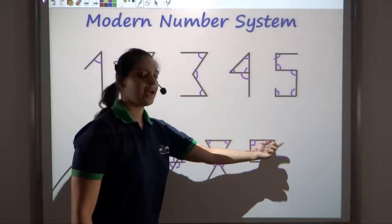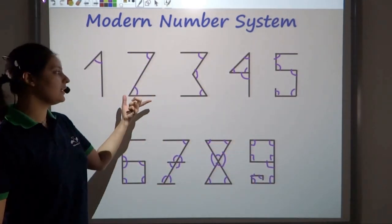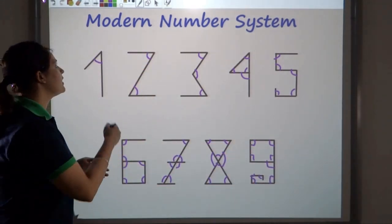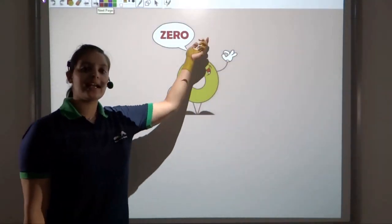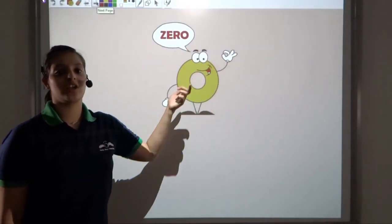That's why nine has this shape and this symbol only, and similarly two has this shape and this symbol. Now, since zero came in much later, you can well understand why zero was shaped like this.